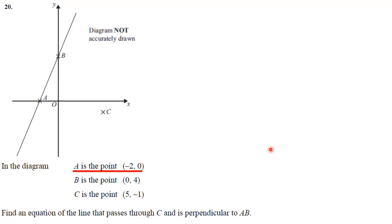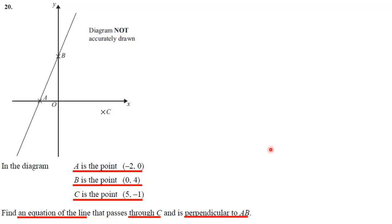In this question, we are given a diagram with point A at coordinates (-2, 0), point B at coordinates (0, 4), and point C at coordinates (5, -1), all shown in the diagram. The question asks us to find an equation of the line that passes through C and is perpendicular to AB. From your coordinate geometry work, you should realize that perpendicular lines involve the gradients of those lines and certain facts about perpendicular gradients that you should know in advance.